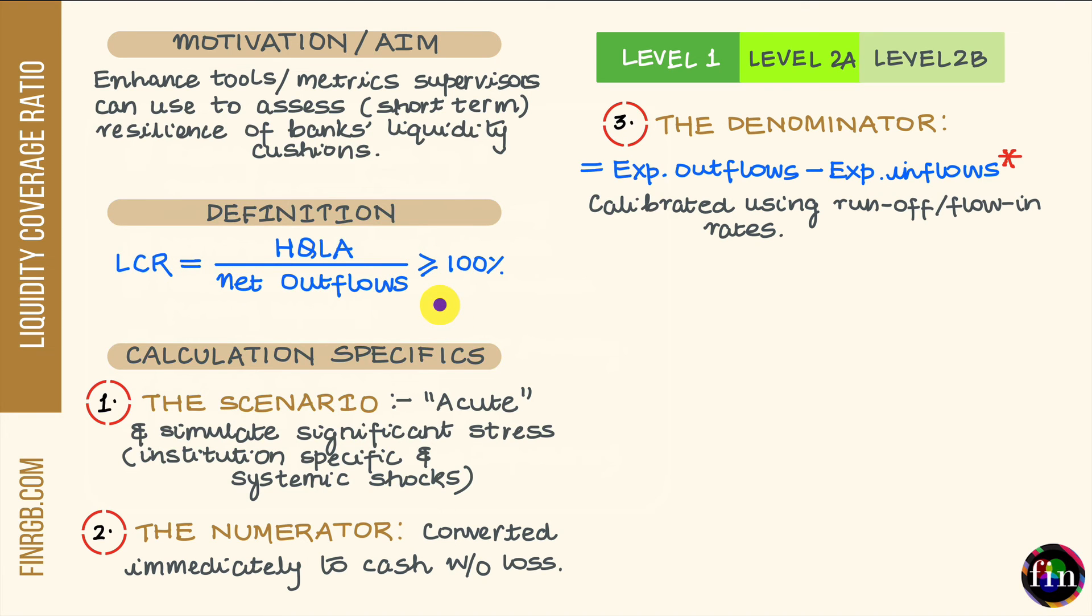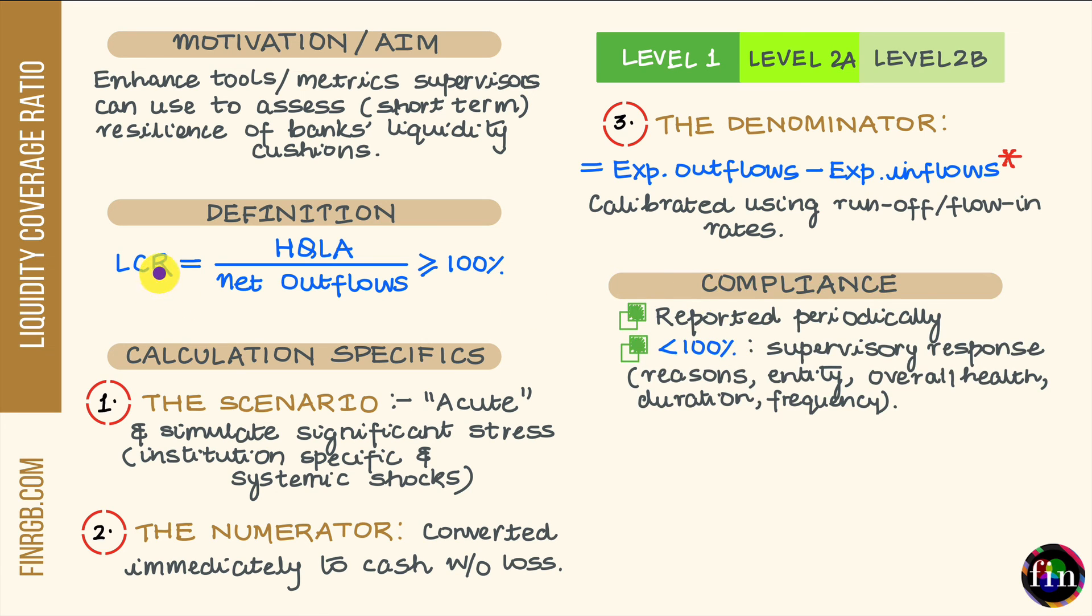Now, before I stop, let me quickly talk about compliance with respect to LCR. The value of the LCR has to be calculated and reported on a periodic basis, at least monthly. The frequency of reporting goes up during stressed times. Banks need to maintain this LCR at a level greater than or equal to 100%. If the LCR at any point dips below this minimum level, then this will invite a response from the supervisor. The nature of this response depends on the reasons as to why this dip happened. Was it because of institution-specific reasons or because of general system-wide stress to liquidity?